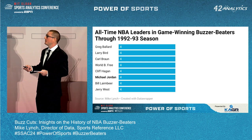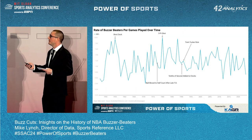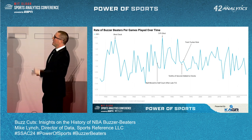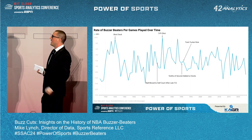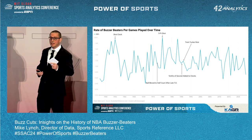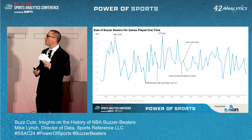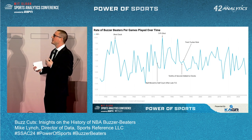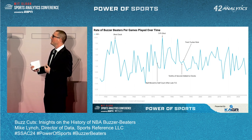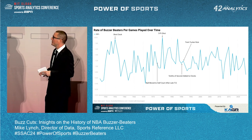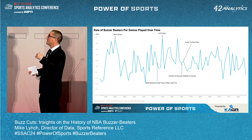Was this because there just weren't many buzzer beaters before the more recent era? That's not really the case — the rate of buzzer beaters per games played over time has been all over the map. Very strange that the two peaks are the year they introduced the shot clock and the year they introduced the three-point shot. Neither of them had any sort of staying power, so I don't think they moved things in a meaningful way — it just seems like a crazy coincidence that right at the time of two huge changes, you suddenly had all these games ending at the buzzer.